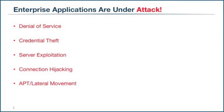Server exploitation is when you send a query to a server, or a server command that shouldn't be there. Connection hijacking is when you use something like a fake Wi-Fi hotspot to intercept a link. And finally you have advanced persistent threat lateral movement — that's when the attacker combines all four of the above attacks to move within an enterprise, get to a server, and then exfiltrate the data.